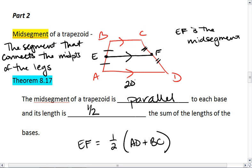So if we knew that AD was 20 and BC was 16, then EF is going to be right in between those two lengths, meaning that EF will be 18.